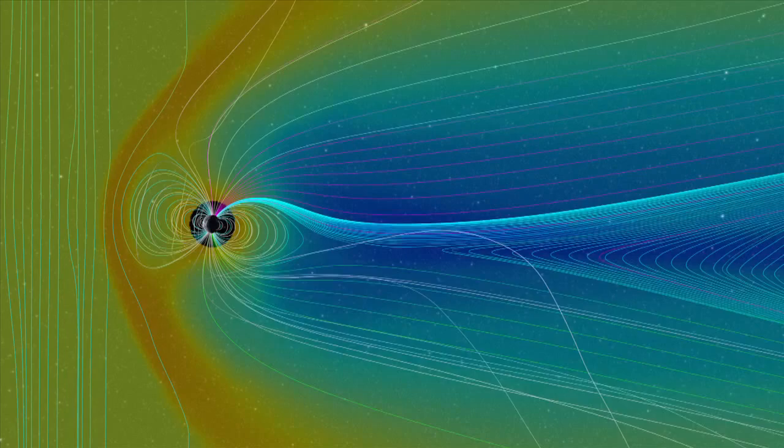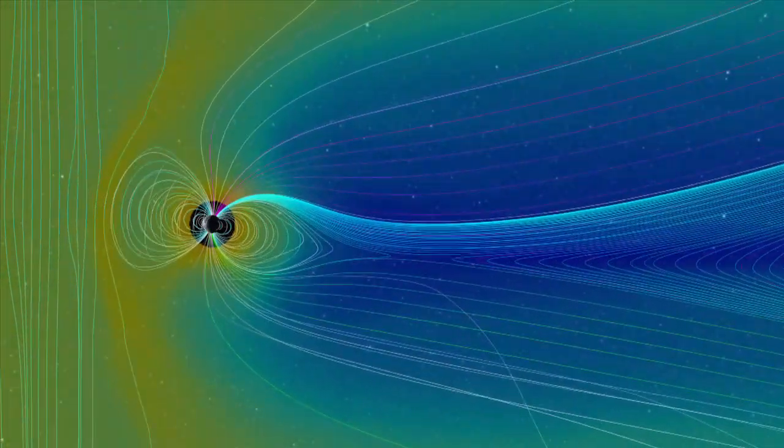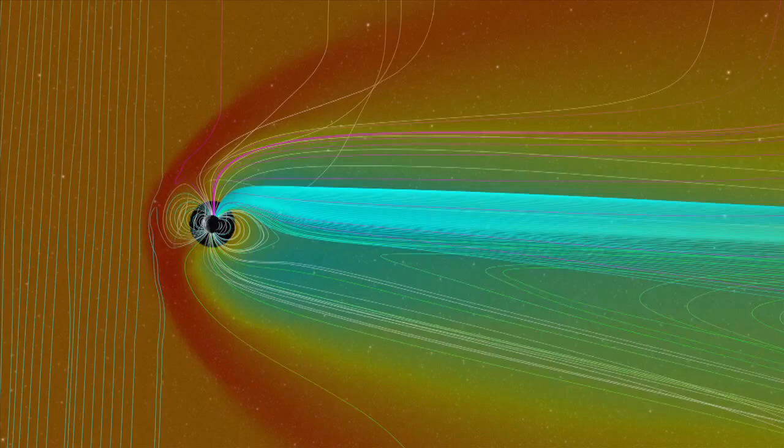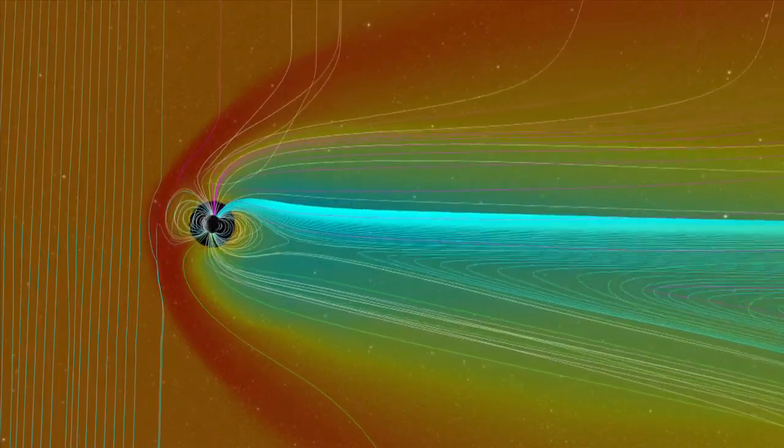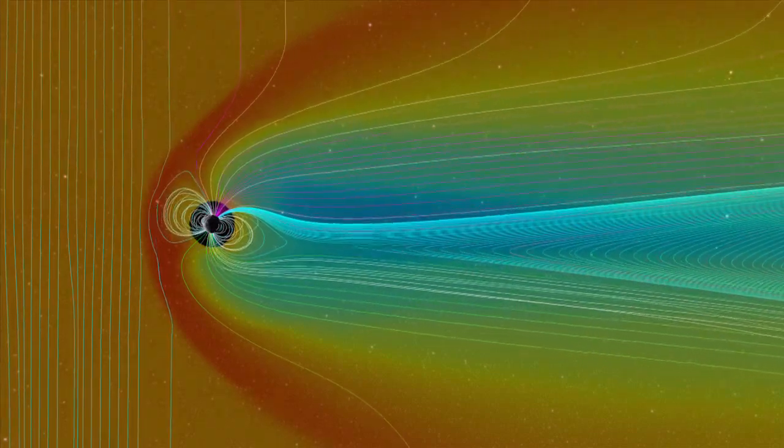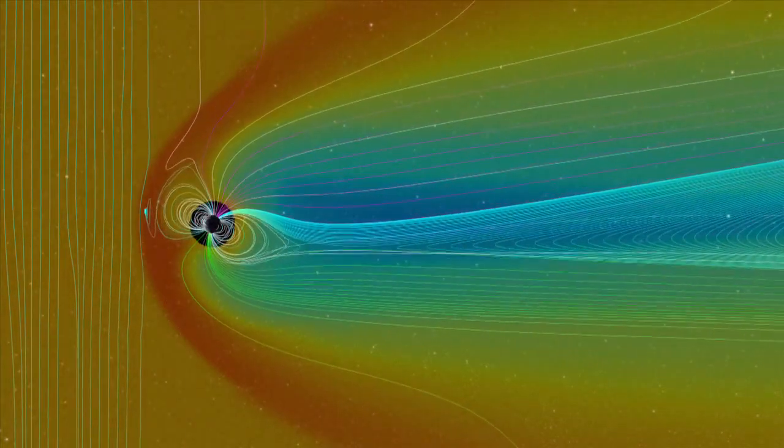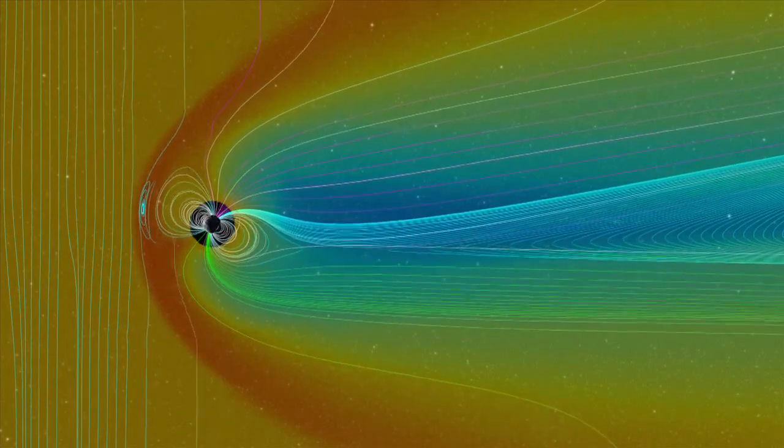But a coronal mass ejection, or CME, can change things. The higher-density plasma and stronger magnetic field carried within the CME strikes Earth's field and significantly alters the structure. Here we see the dramatic changes in Earth's magnetic field and the shape of the magnetopause as the CME passes Earth.